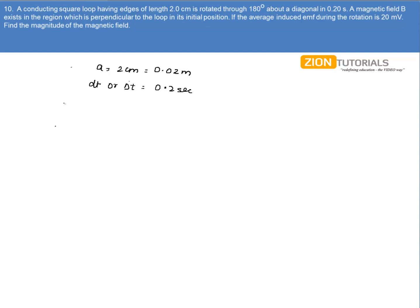First of all let's calculate the flux. Flux will be given by 2 times of B into A, and emf is given by minus of dφ by dt which equals 2 times of B into A divided by delta t.